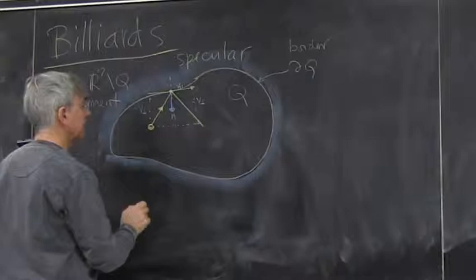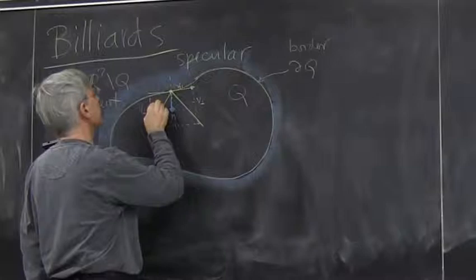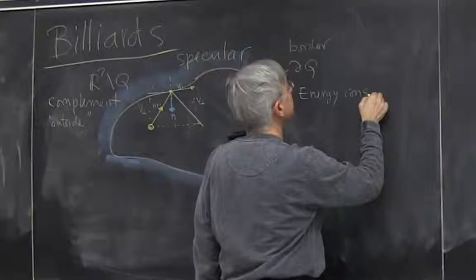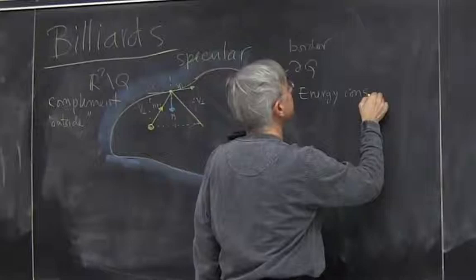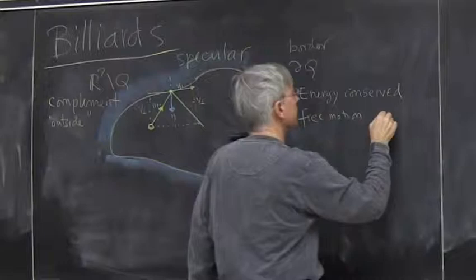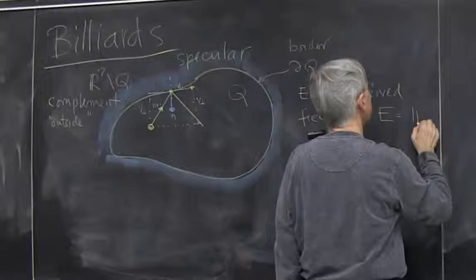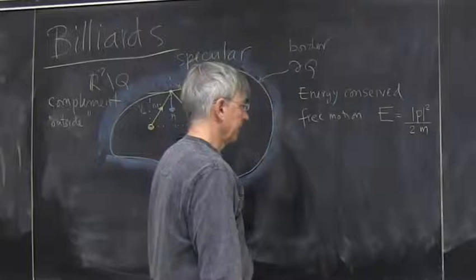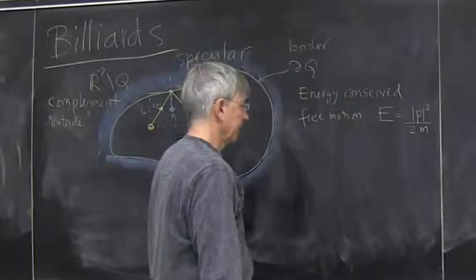So we can write this as a formula. We'll assume energy conservation. We'll assume free motion in between collisions. So that says the energy is just momentum squared over 2m. Free motion of two-dimensional vector in a plane.